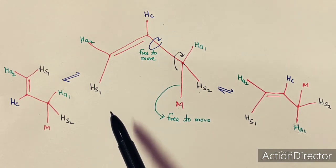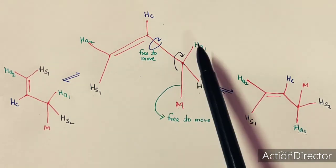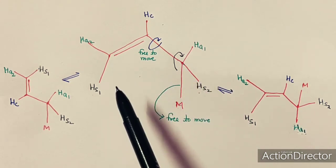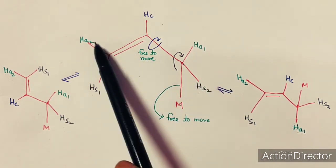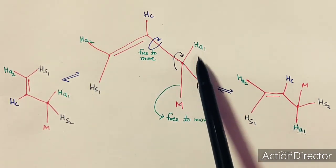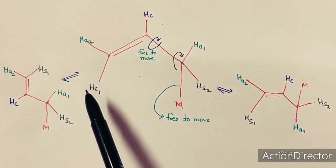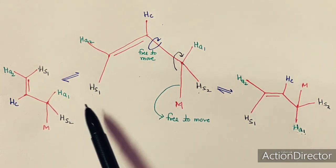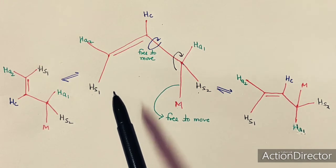If the molecule is static, it will show three peaks, but if it shows fluxional behavior, these hydrogen atoms become equivalent due to fast exchange and we get only two peaks in the NMR spectroscopy, confirming fluxional behavior.